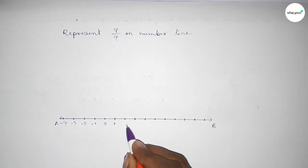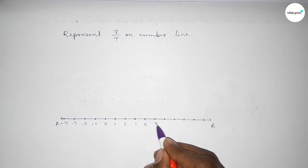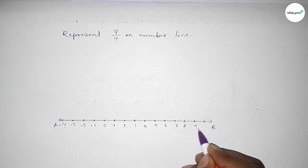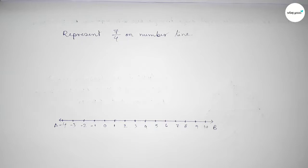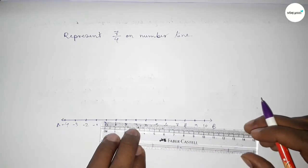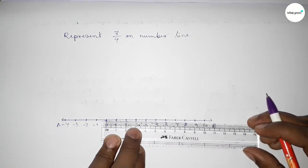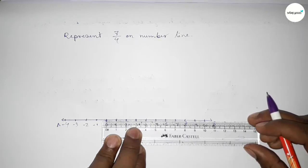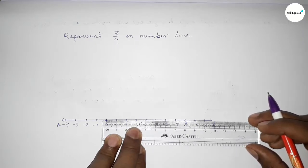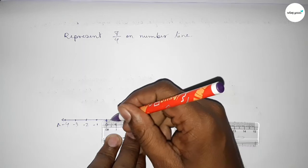And on this side: 1, 2, 3, 4, 5, 6, 7, 8, 9, 10. Now we have to divide the distance between any two numbers into four equal parts. First, divide the distance between 0 to 1 into half.